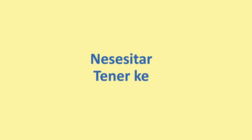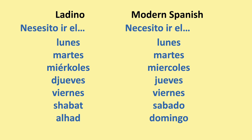Here are the days of the week starting with Monday in Ladino and ending in Sunday: lunes, martes, miércoles, jueves, viernes, shabbat, aljad. 'Necesito ir el lunes, martes, miércoles, jueves, viernes, shabbat, aljad' — I need to go Monday, Tuesday, Wednesday, Thursday, Friday, Saturday, and Sunday. The ones that change the most are Saturday — 'sábado' in modern Spanish, not 'shabbat' — and Sunday — 'domingo', not 'aljad'.